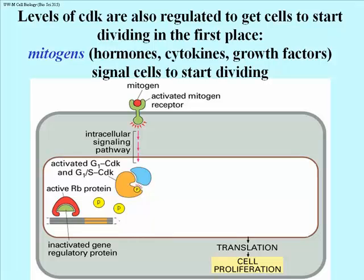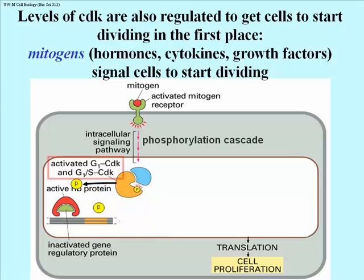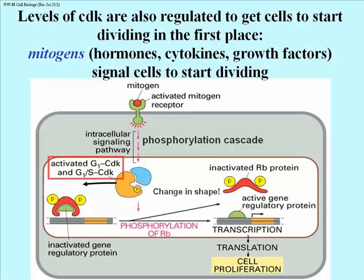Hormones are defined by the fact that they travel from endocrine organs through the vascular system, that is through the blood, to target cells, to target tissues, to target organs. Growth factors and cytokines differ from hormones in that they are often signals passed directly from one cell to another without ever getting into the circulatory system. You're looking at an example of a known signal transduction pathway that starts when a mitogen binds to a cell surface receptor, initiates a phosphorylation cascade, that then activates a number of cyclin-dependent kinases. These in turn phosphorylate the RB subunit of a transcription factor that represses several genes.